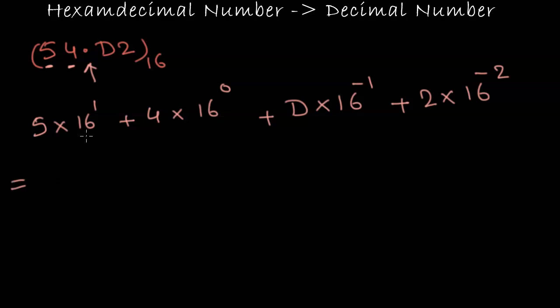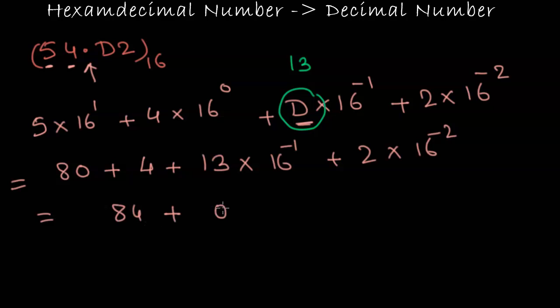Let's expand this. We have 5 into 16 which is 80 plus 4 into 16 to the power 0 which is 1. So we have 4 plus D. Now D equivalent in my decimal form is 13. So we have 13 into 16 to the power minus 1 plus 2 into 16 to the power minus 2. So we have 84 plus 0.8125 and then 2 into 16 to the power minus 2 which is 0.0078125.